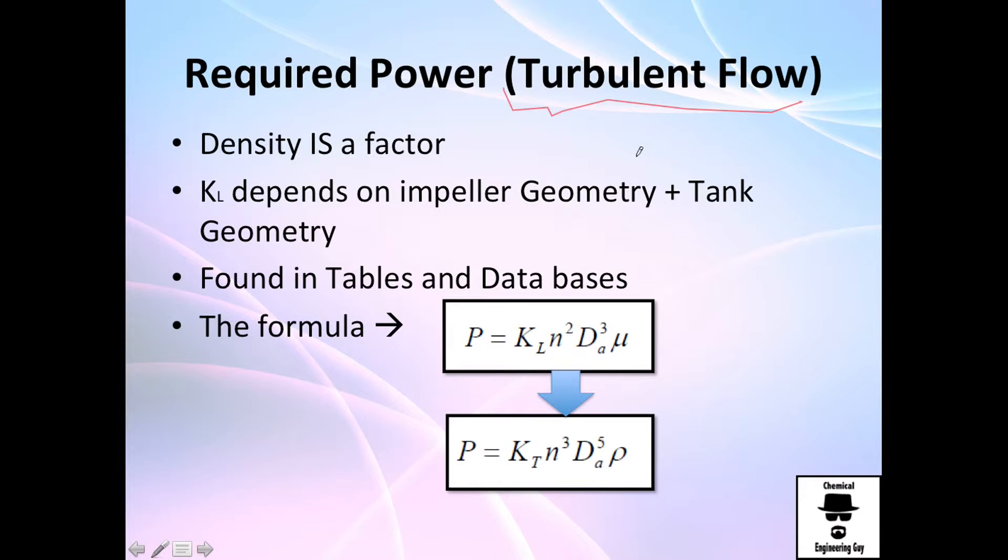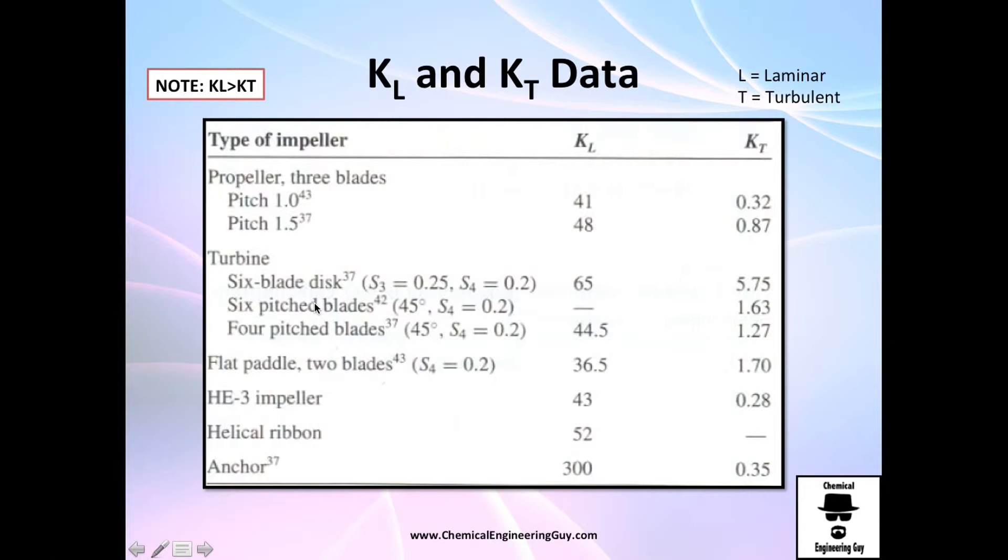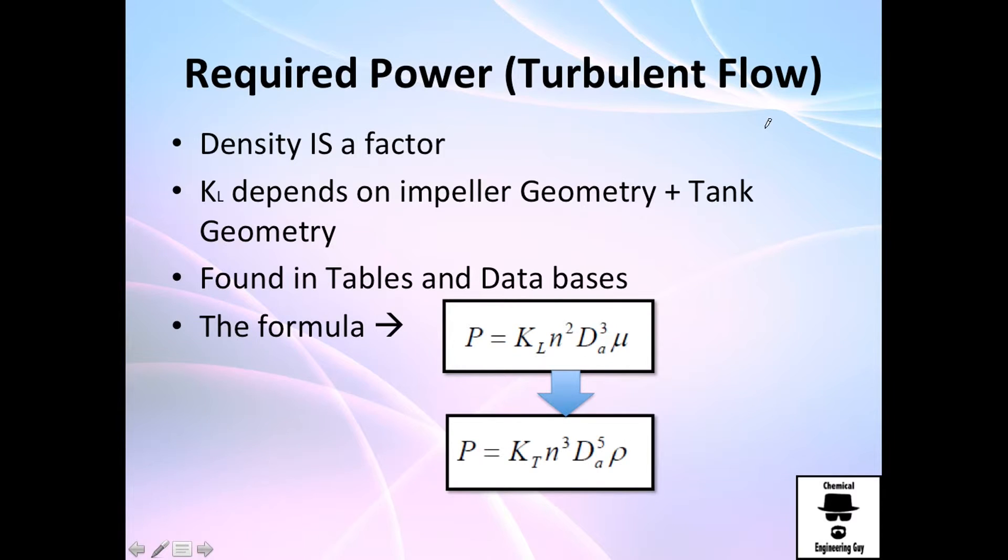For turbulent flow, density now is a factor—we need to consider it. KT depends on the impeller geometry again and the tank geometry. It's found in tables and databases. The only detail is that we need to check out this column. The formula is pretty similar, instead of having this one we're going to say that density is now a factor, and we have KT with the Reynolds number plugged in.